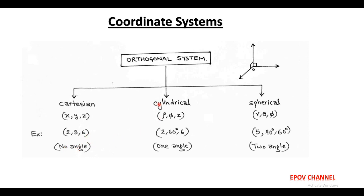In cylindrical coordinate system, the coordinates are rho, phi, and z. For example, (2, 60 degrees, 6). Here, phi is the angle. In cylindrical coordinate system, rho is called the radius of the cylinder while z is called the height of the cylinder. In cylindrical coordinate system, there is only one angle.